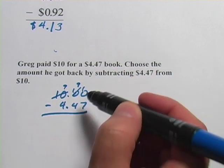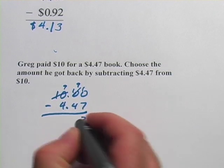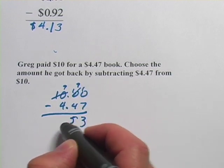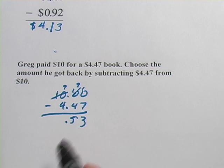Now we're ready to do our subtraction. 10 minus 7 is 3. 9 minus 4 is 5. I've got my decimal point. 9 minus 4 is 5, and that's it.